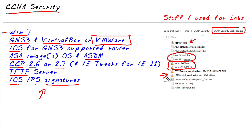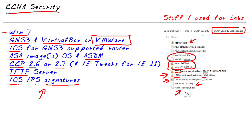Here are a couple of iOS images that are supported by GNS3: a 3700 series running 12.4 and a 7200 series running 15.x. Here's CCP version 2.7 of Cisco Configuration Professional. This iOS S456 is a signature package for iOS-based IPS, and this last file is the public key from Cisco that's going to be required to implement iOS-based IPS.